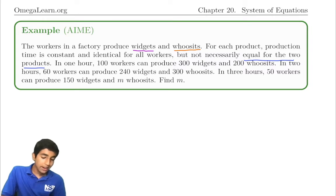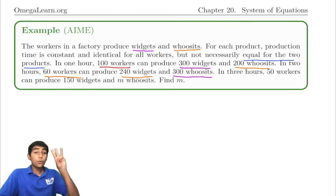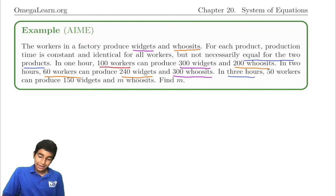In one hour, 100 workers can produce 300 widgets and 200 whoosits. In two hours, 60 workers can produce 240 widgets and 300 whoosits. In three hours, 50 workers can produce 150 widgets and m whoosits. Find m.